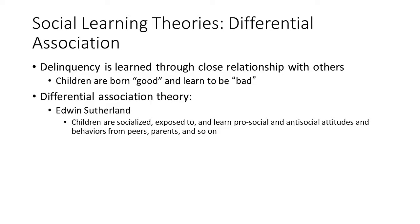The first is social learning theory, specifically differential association. Social learning theory says that all behavior is learned, and delinquent behavior, like other forms of behavior, is also learned. Adolescents learn to commit crime from others by learning the norms, values, and patterns of behavior conducive to crime. Therefore, according to learning theory, delinquent behavior is the product of the social environment and not an innate characteristic.